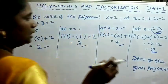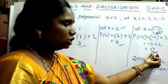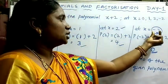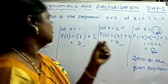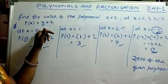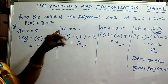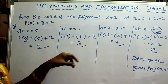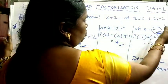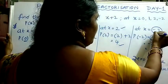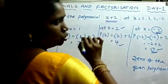That means: at which value of x do we get the value of the polynomial as 0? That constant value of x is called the zero of the given polynomial. Here, at x = 0 the value is 2, at x = 1 the value is 3 — these are not zeros of the polynomial. But at x = −2 we got the value 0. Therefore, −2 is the zero of the given polynomial x plus 2.